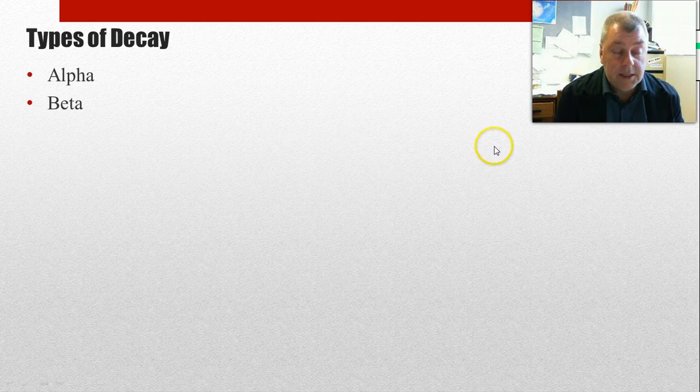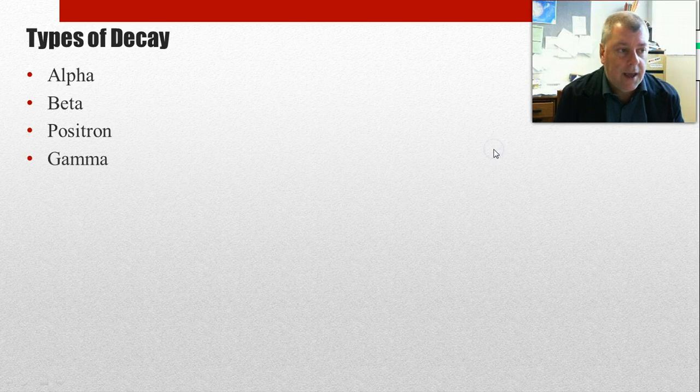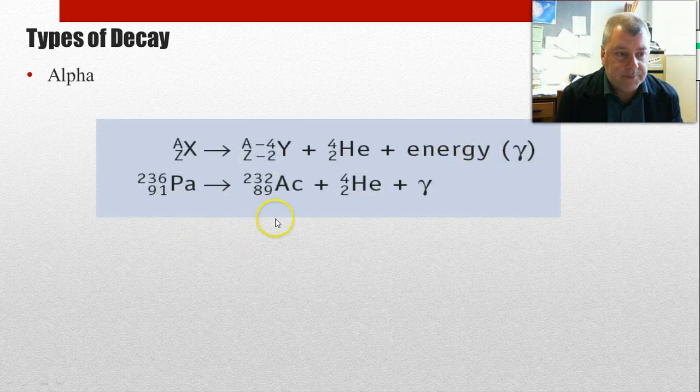There's alpha, beta. Now this is the new bit, positron decay and gamma decay. Alpha decay, quickly, let's look at it.